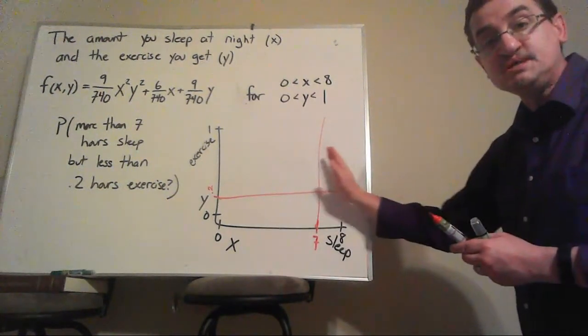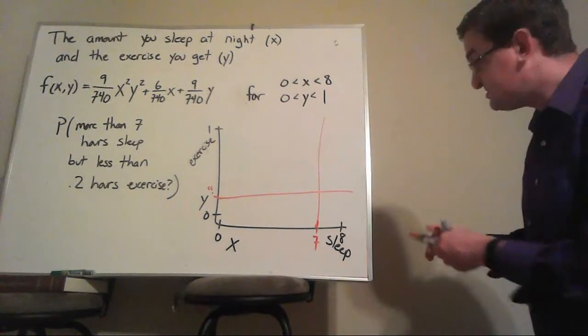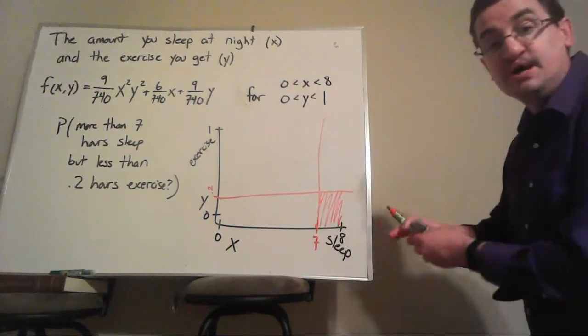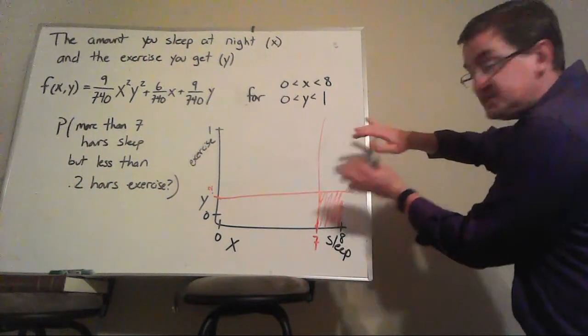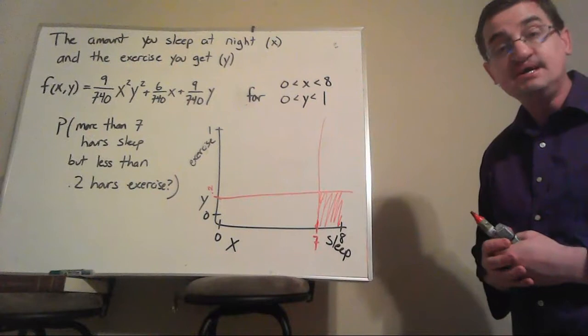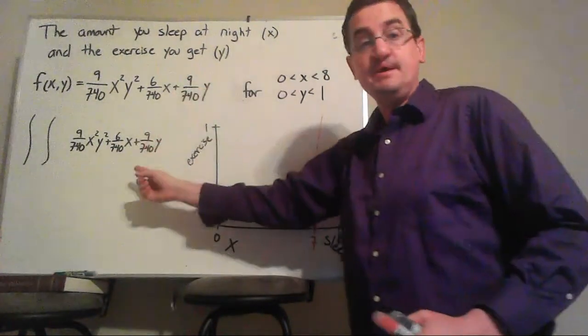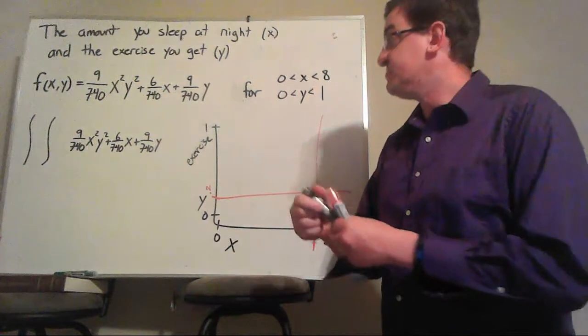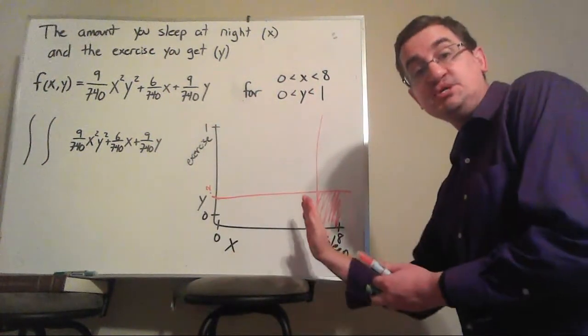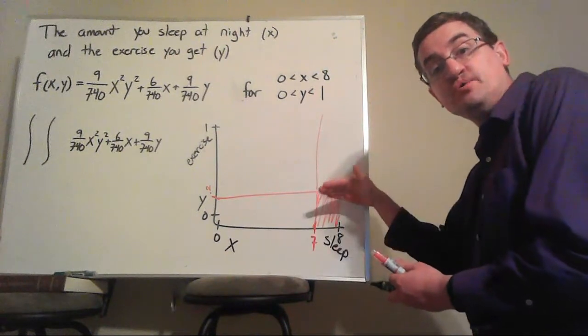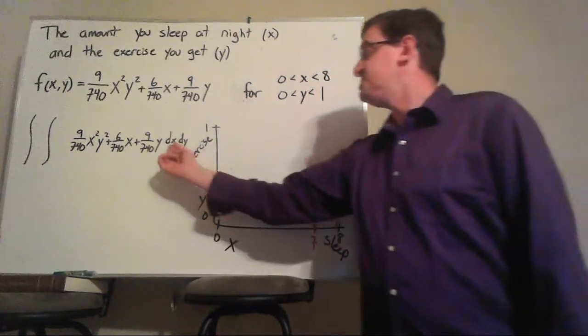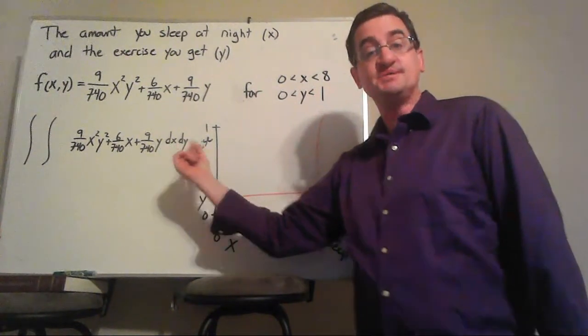And what do I want? I want more sleep, so on this end, but less exercise. I want the probability right in here. And so I'm looking for the area of some dome hanging over this tiny corner of the probability set. To solve it, I'm going to come over here to my PDF, and I'm going to integrate this, and I can do either dx dy or dy dx. Do I want to slice this way or slice that way? This example, it doesn't particularly matter. So I'm just going to choose to integrate across sleep and then exercise.